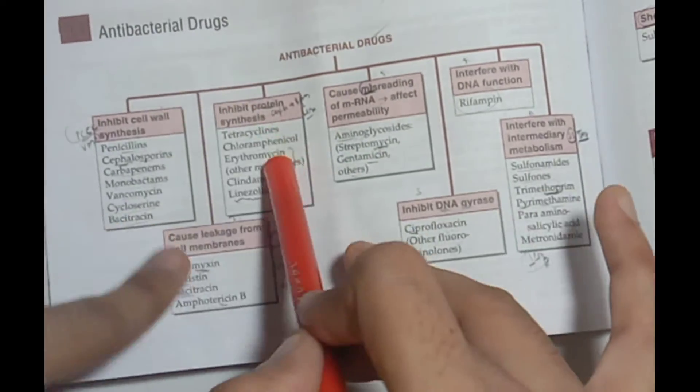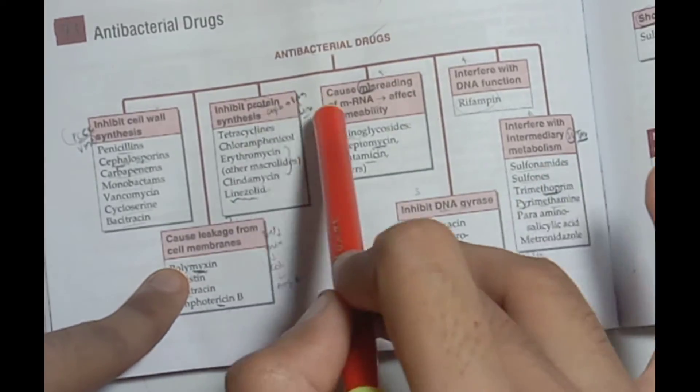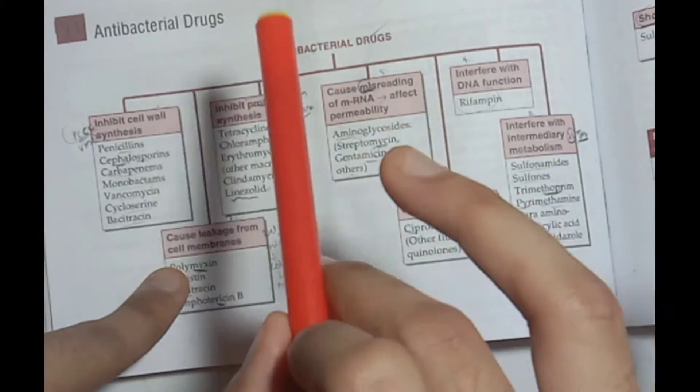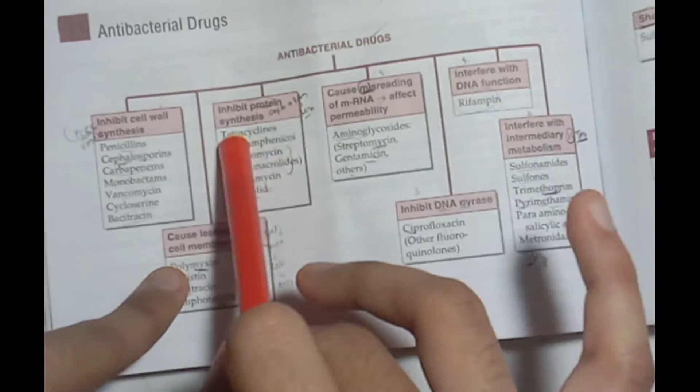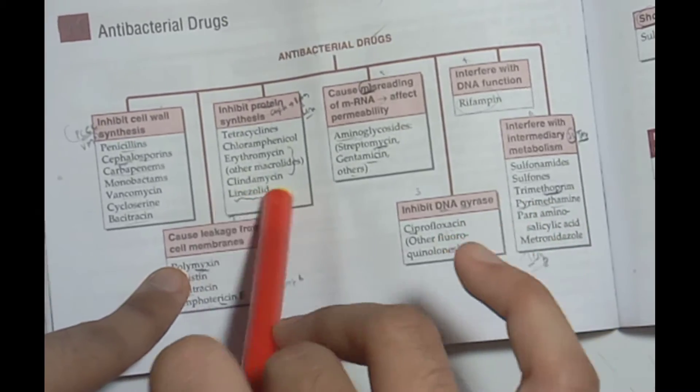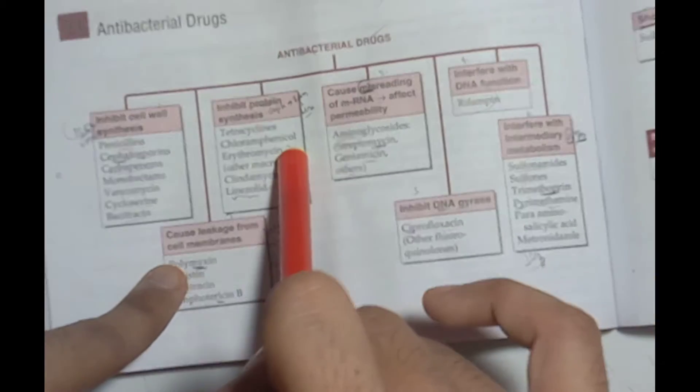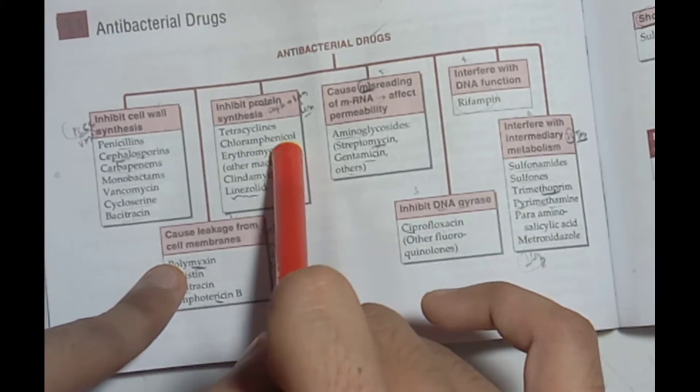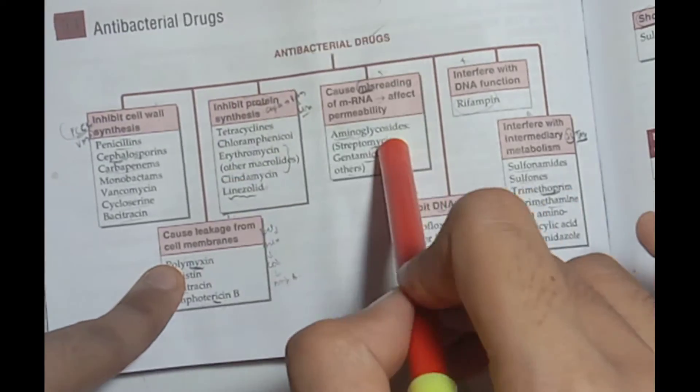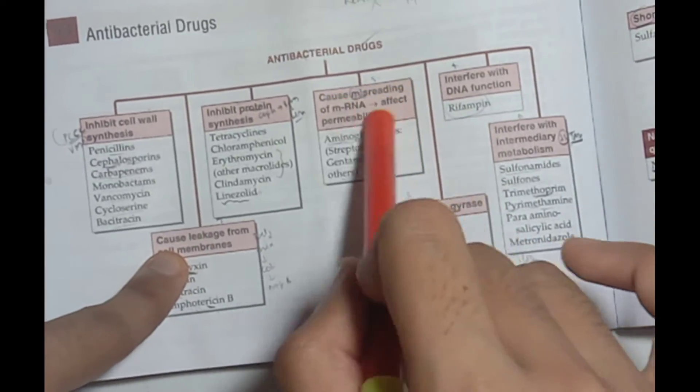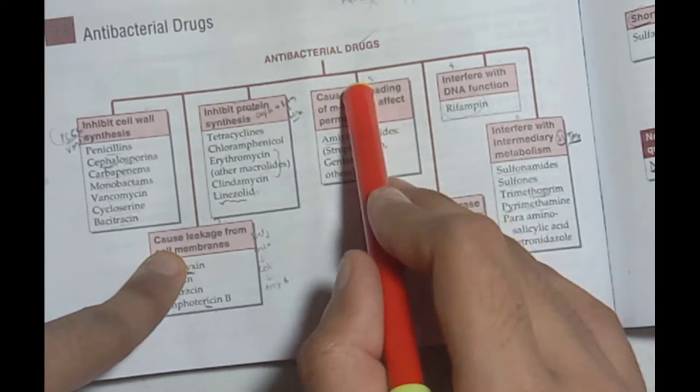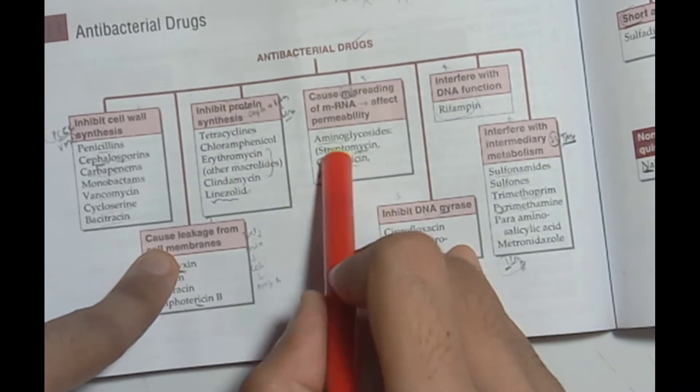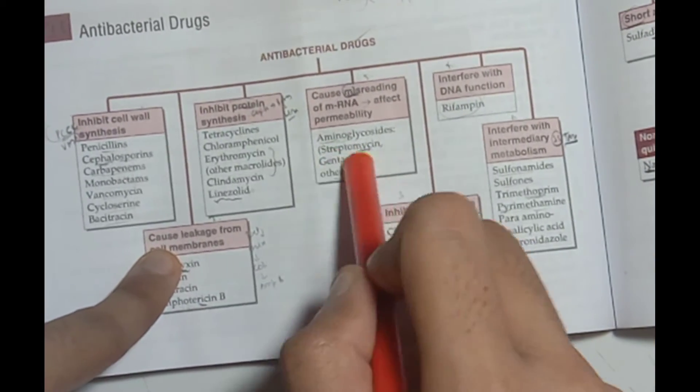For protein synthesis, we have Tetracycline, Chloramphenicol, and Linezolid. Then we have the mycins: Erythromycin and Clindamycin. For misreading of mRNA, we have aminoglycosides: Streptomycin, Gentamicin, and other aminoglycosides.